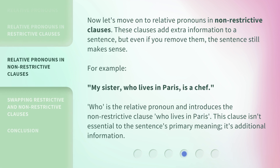Now let's move on to relative pronouns in non-restrictive clauses. These clauses add extra information to a sentence, but even if you remove them, the sentence still makes sense. For example: 'My sister, who lives in Paris, is a chef.' 'Who' is the relative pronoun and introduces the non-restrictive clause 'who lives in Paris.' This clause isn't essential to the sentence's primary meaning — it's additional information.